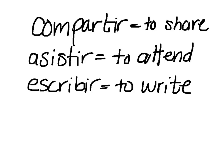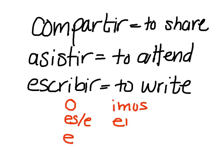I'd like you to add a table of conjugations for each of these three IR verbs. Your first chart is compartir, 'to share.' The second one is asistir, 'to attend' — like to attend a school. And the last one is escribir, 'to write.' Add three tables to your notes for each of those verbs. Remember your endings are going to be: O, ES, E, E, IMOS, EN, EN. So root plus the endings.